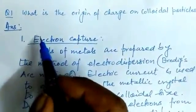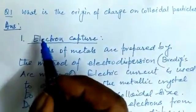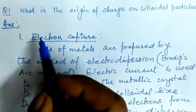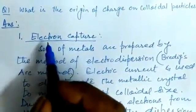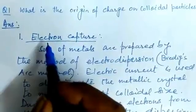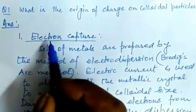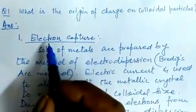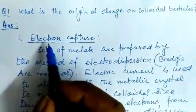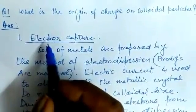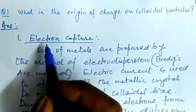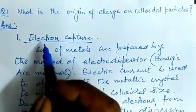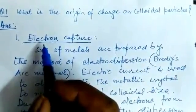There could be several reasons for the charge present on the colloidal particle. The two most important ones are: one is electron capture, and another is preferential adsorption of ions on the surface of the colloidal particle.